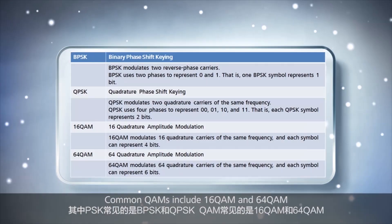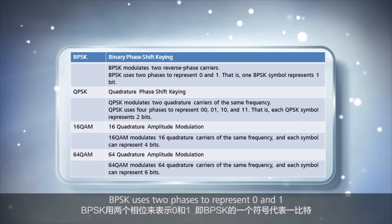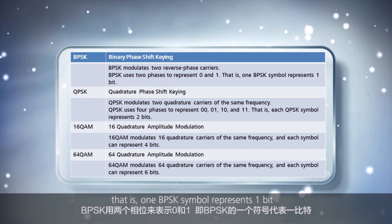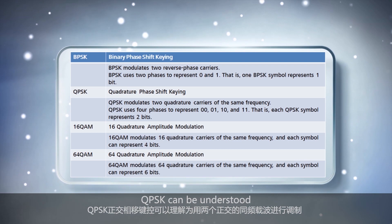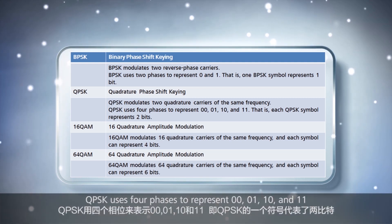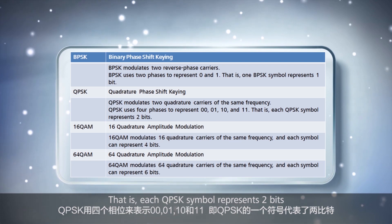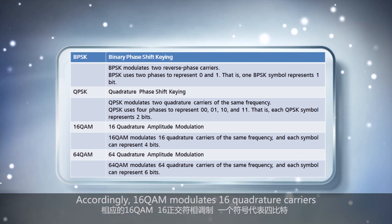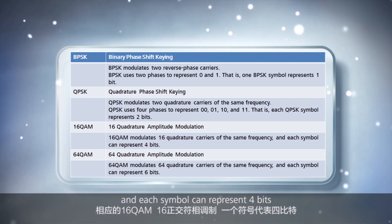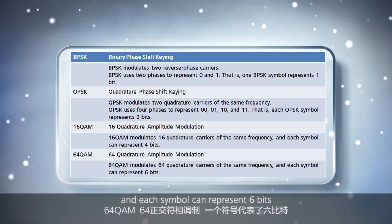Common PSKs include binary phase shift keying (BPSK) and quadrature phase shift keying (QPSK). Common QAMs include 16QAM and 64QAM. BPSK can be understood as modulating two reverse-phase carriers; it uses two phases to represent 0 and 1, so one BPSK symbol represents one bit. QPSK can be understood as modulating two quadrature carriers of the same frequency; it uses four phases to represent 00, 01, 10, and 11, so each QPSK symbol represents two bits. Accordingly, 16QAM modulates 16 quadrature carriers of the same frequency and each symbol can represent four bits. 64QAM modulates 64 quadrature carriers of the same frequency and each symbol can represent six bits.